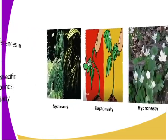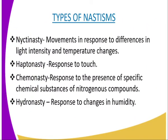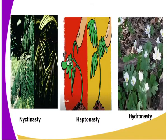Looking at our diagram for chemonasty: this is the response to the presence of specific chemical substances such as nitrogenous compounds like urea and ammonia, found in insectivorous plants. When an insect is trapped by the tendril hairs of an insectivorous plant like the Venus flytrap, the insect provides the chemical stimulus for the release of digestive enzymes by the plant. Another type of nastics is hydronasty, which is a response to changes in humidity — remember, hydro means water, and humidity is related to water. This type of response is seen in some flowers such as those of the Dandelion, which close when the air is moist.